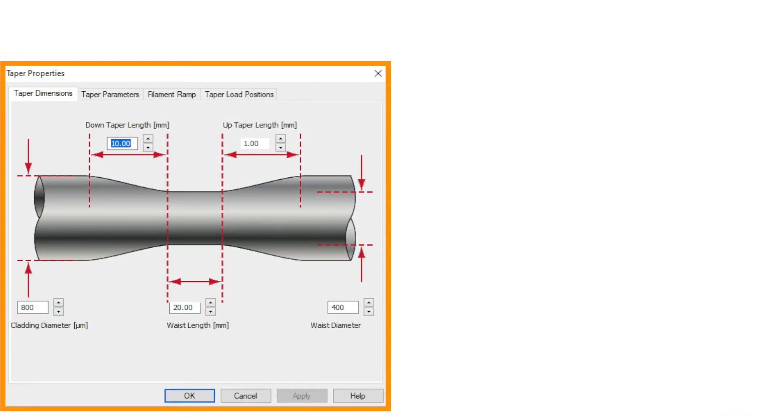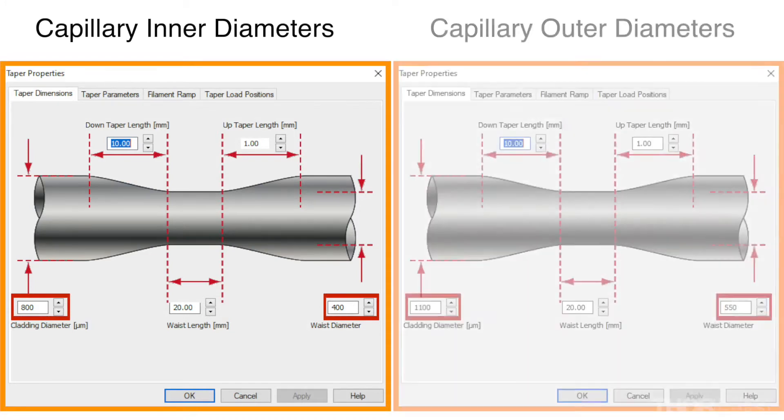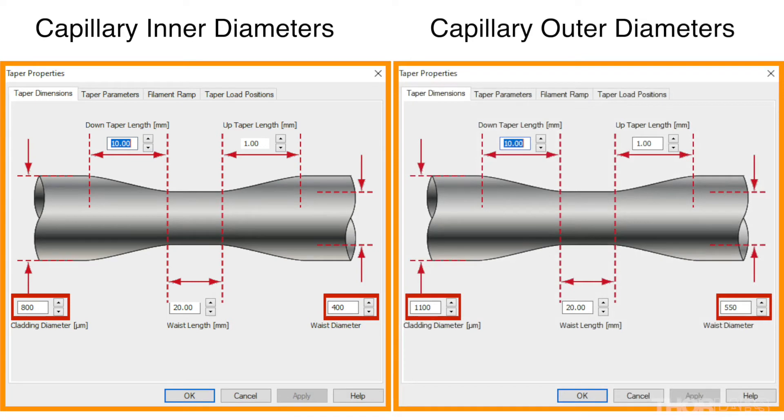When setting the starting and waist diameters for a capillary tube, the inner diameters may be input as the taper dimensions as shown here. Equivalently, the capillary outer diameter and same taper ratio may be used to calculate the outer diameter at the waist.